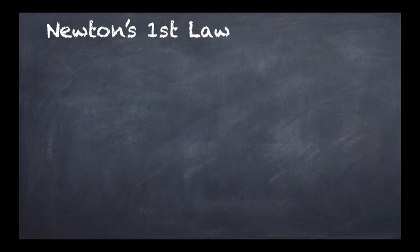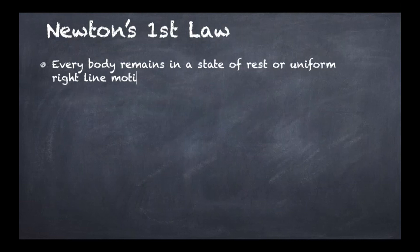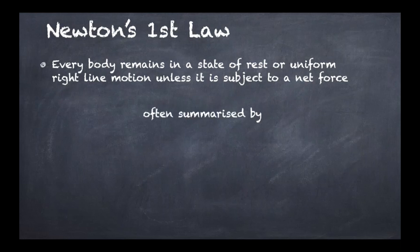So first let's understand why people might think that Newton's first law can be derived from Newton's second law. Newton's first law states in substance that every body remains in a state of rest or uniform right-line motion unless it is subject to a net external force. Now it's often summarized as an equation which states a equals 0. That's a shorthand for the acceleration of the body is 0 if there is no force acting on it.